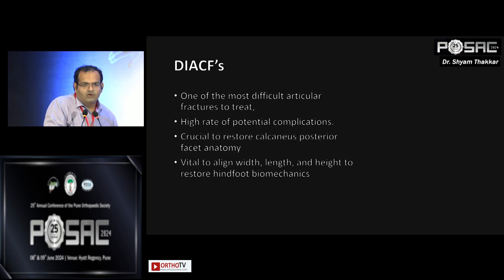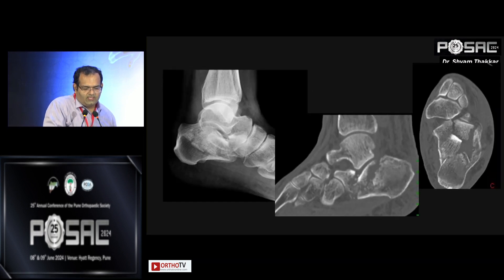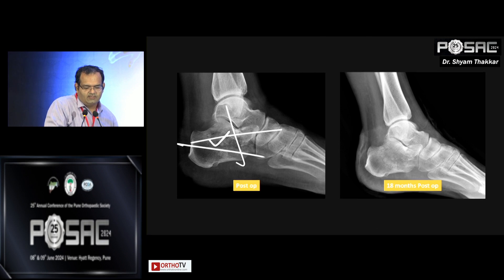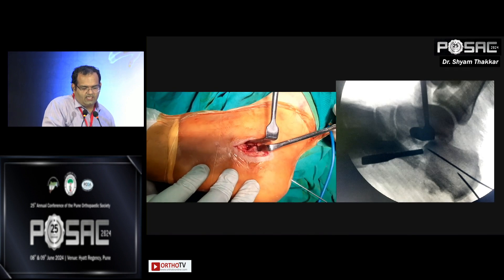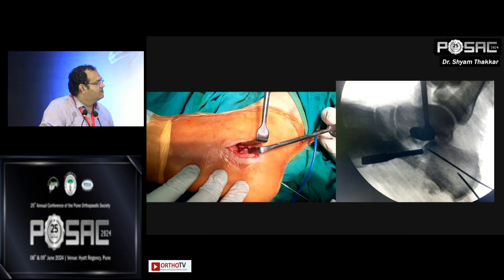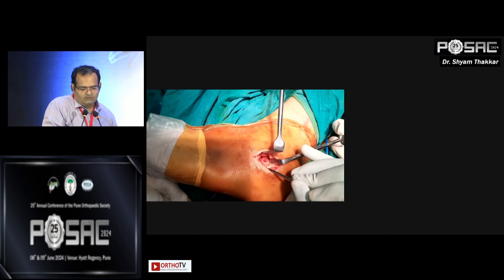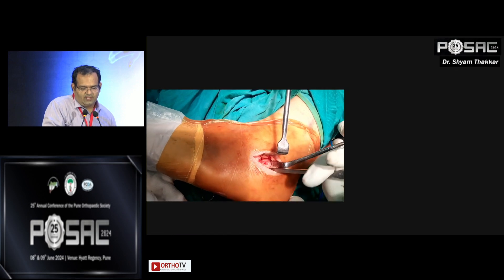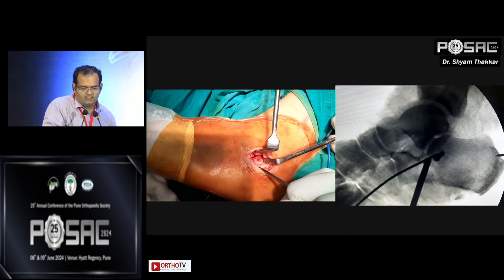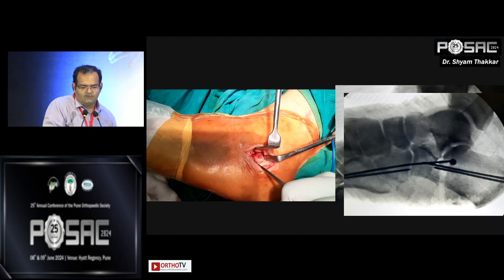In one case of a joint depression type fracture, reconstruction was done using K-wires, and after removing the K-wires the results are visible. In a tongue type fracture case, the small sinus tarsi incision allowed direct visualization of the articular surface and the depressed fragment. It was elevated using a K-wire and osteotome. Temporary K-wires stabilize the reduction, and these can be replaced with cannulated cancellous screws.